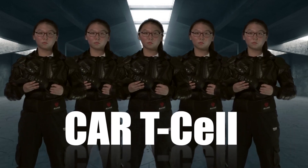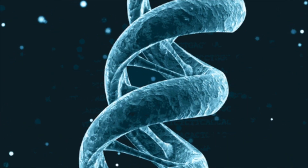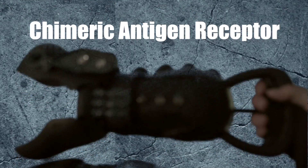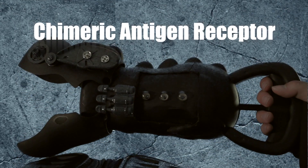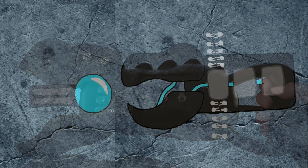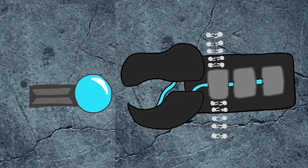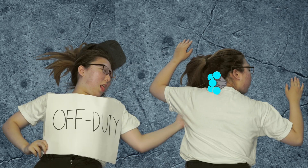So our T-cell unit soldiers, now called CAR T-cell unit, was genetically modified to have shimmering antigen receptors — CARs. These CARs are able to identify and bind to B-lymphocyte antigen CD19, even with the disguise and clustered antigens.